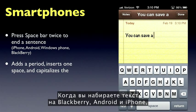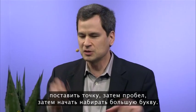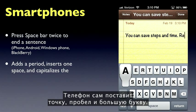When you're typing on your BlackBerry, Android, or iPhone, don't bother switching to the punctuation layout to hit the period and then a space, then try to capitalize the next letter. Just hit the space bar twice. The phone puts in the period, the space, and the capital for you. It is totally amazing.